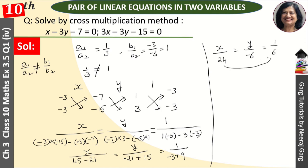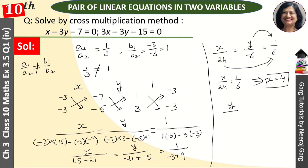Now we need to find the value of x. x upon 24 is equal to 1 upon 6, so x is equal to 4. And setting y upon minus 6 equal to 1 upon 6, our value of y comes out to minus 1.